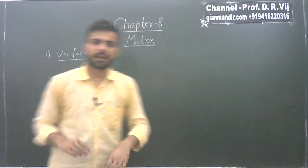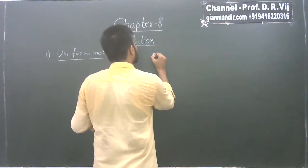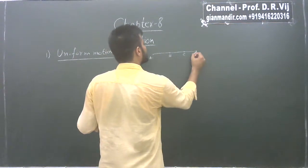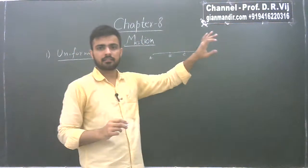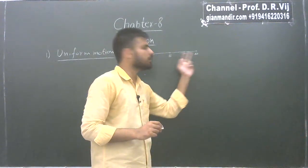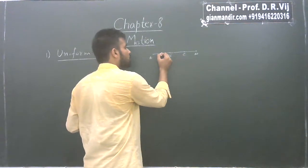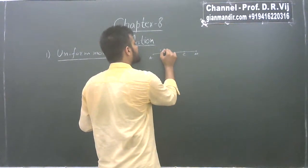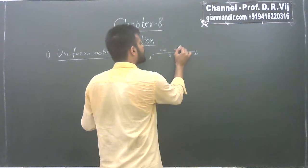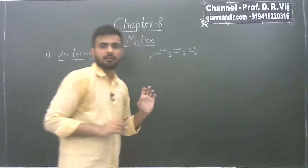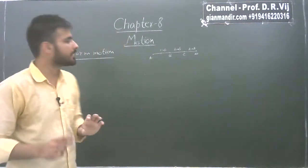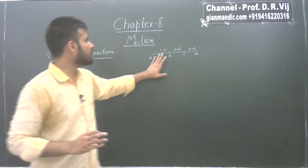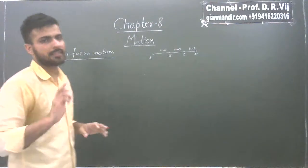Uniform motion can be defined as follows. Let's say a person is going from point A to B to C to D. If at any point — A, B, C, or D — the velocity of that person is the same, let's say 10 meters per second at each point, then the body is said to be in uniform motion. That is, when the velocity of a body is equal at any interval, the body is in uniform motion.